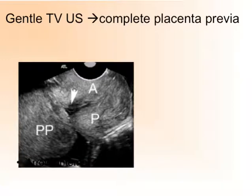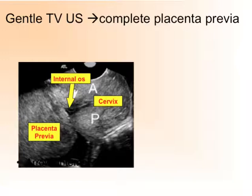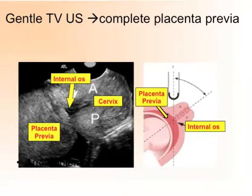A transvaginal scan: A represents the anterior lip of the cervix, P the posterior, and the arrow points at the internal os. On the left-hand side, PP is the placenta previa — the placenta is also completely covering the os. It is important to realize that a transvaginal ultrasound scan should always be performed gently and with respect, maintaining dignity — but in particular in case of antepartum hemorrhage, the probe must be inserted extremely carefully to prevent a provoked bleeding.